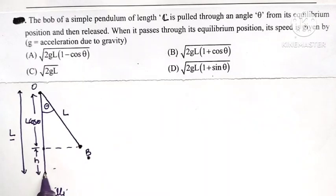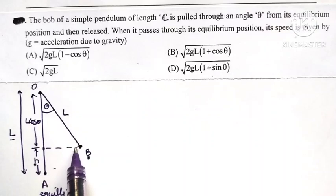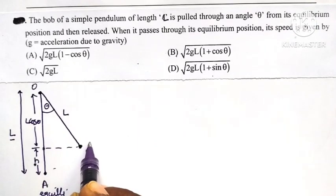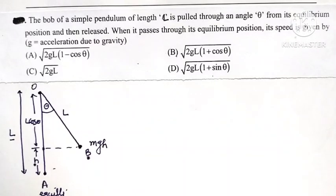The bob rises by height h. When the bob rises by height h, it gains potential energy. The potential energy gained by the bob is mgh.